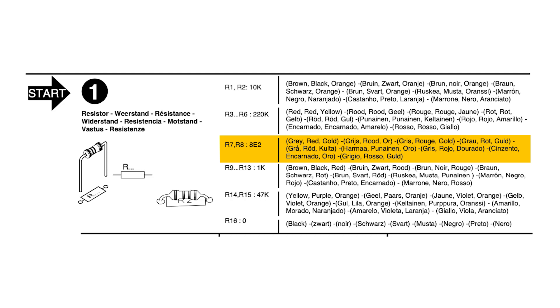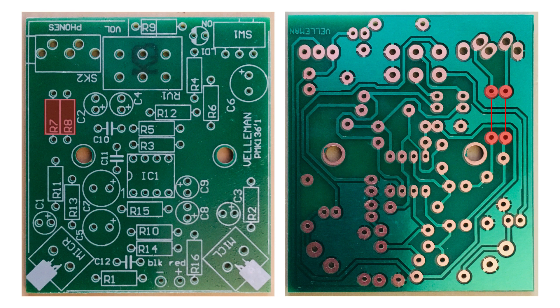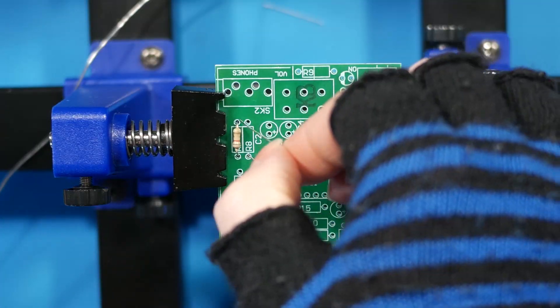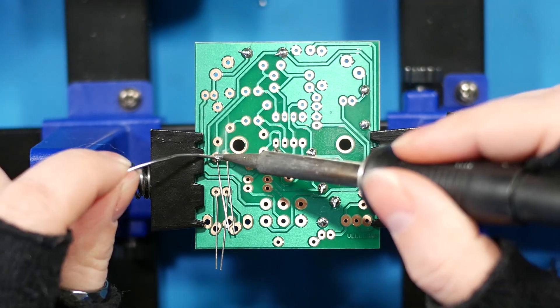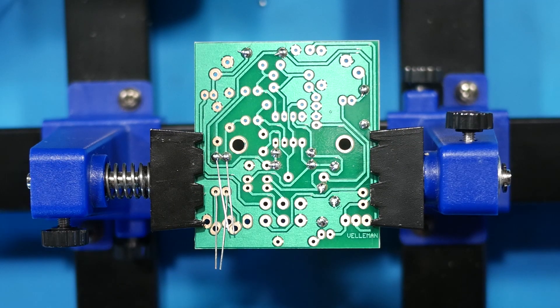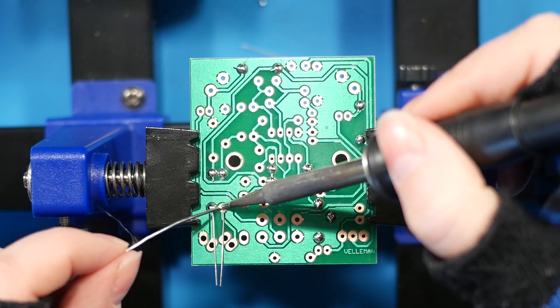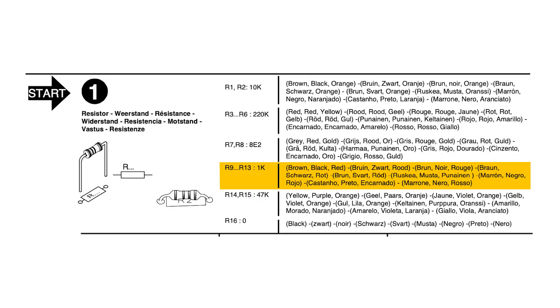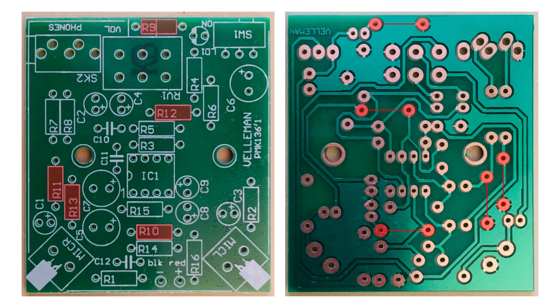The next two are 8.2 ohms: grey, red, gold. Place them in R7 and R8. Next is five 1k ohm resistors. The five attached that are brown, black, red. Place them in R9, 10, 11, 12, and 13.